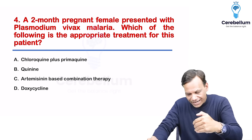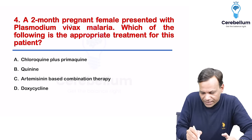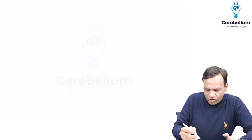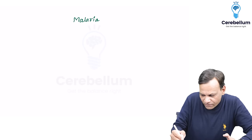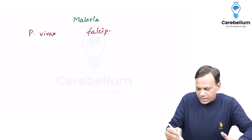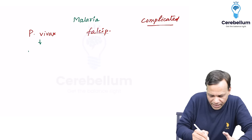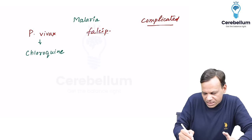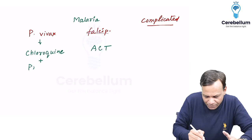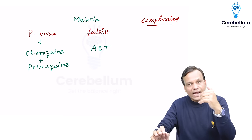Next question: a two-month pregnant female (first trimester) presented with Plasmodium vivax malaria — what is the appropriate treatment? For uncomplicated P. vivax malaria in a normal person, the drug of choice is chloroquine plus primaquine (for radical cure). For P. falciparum, it is artemisinin combination therapy (ACT). In pregnancy first trimester, chloroquine is safe but primaquine is not safe, so we give chloroquine without primaquine.